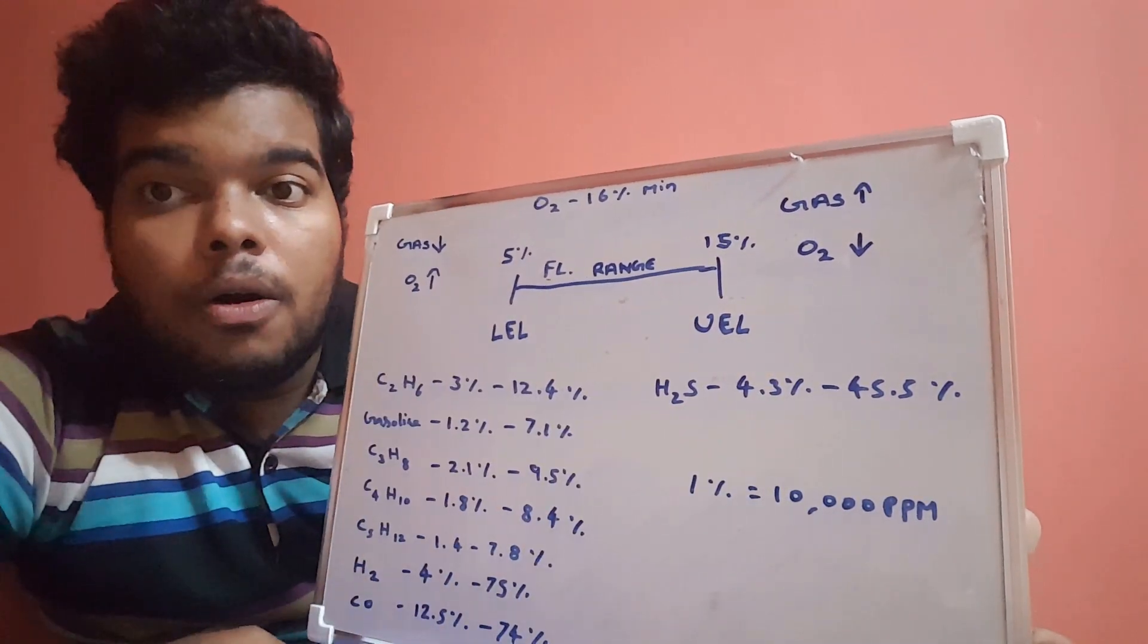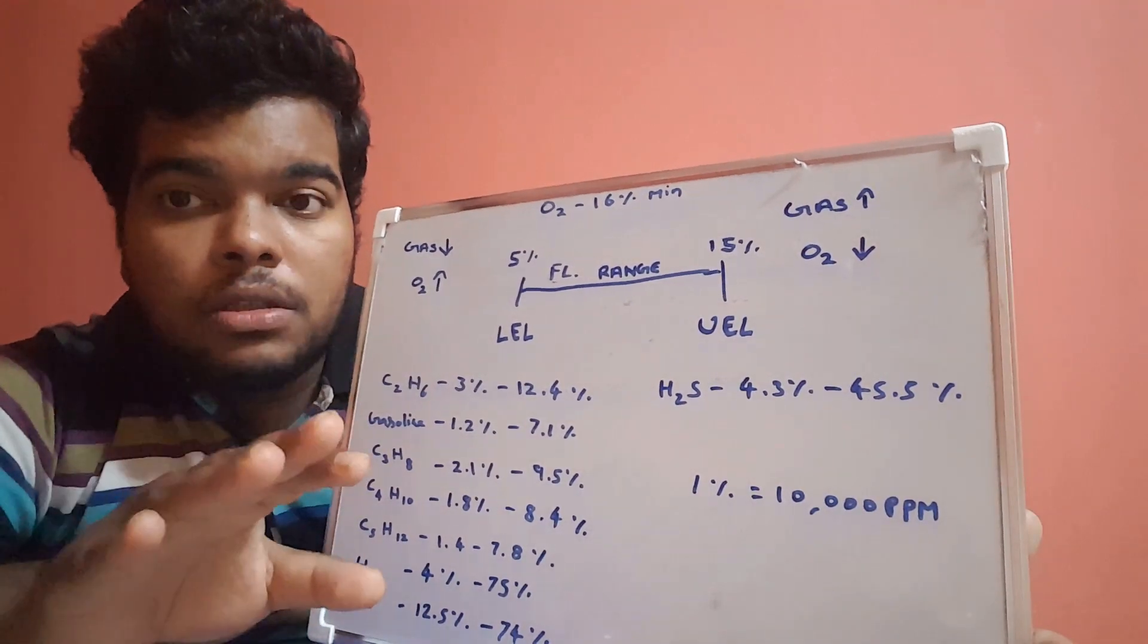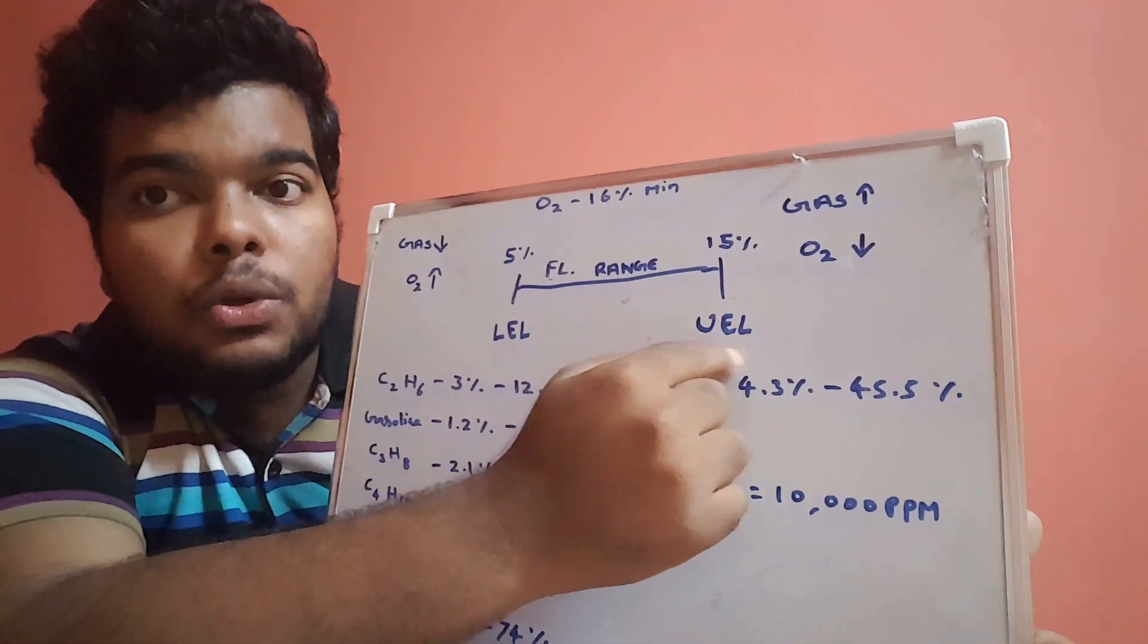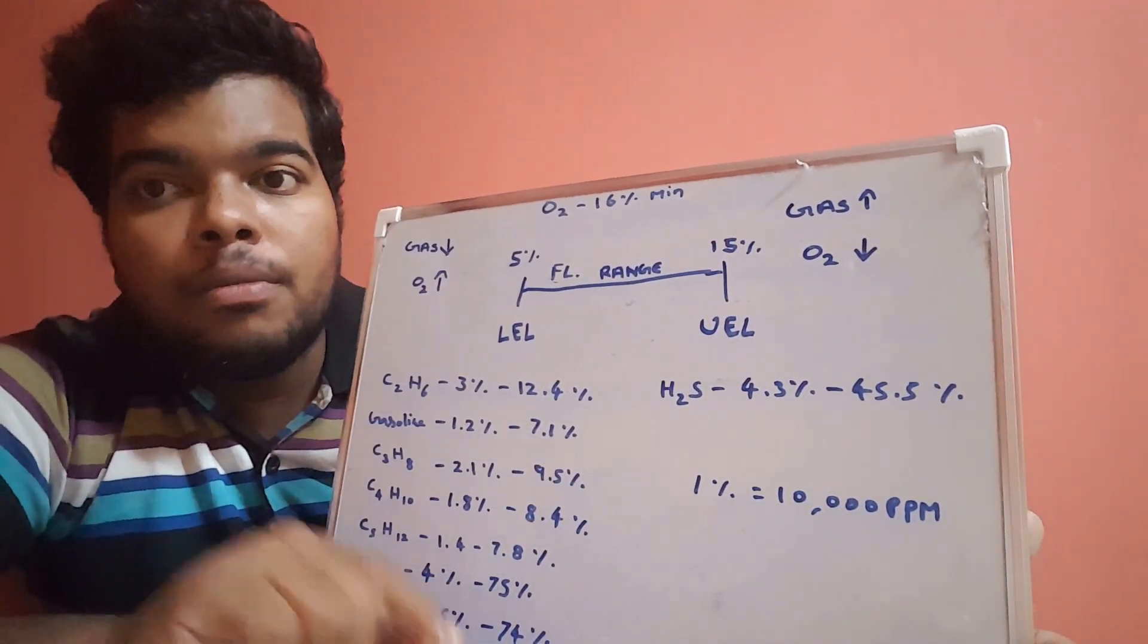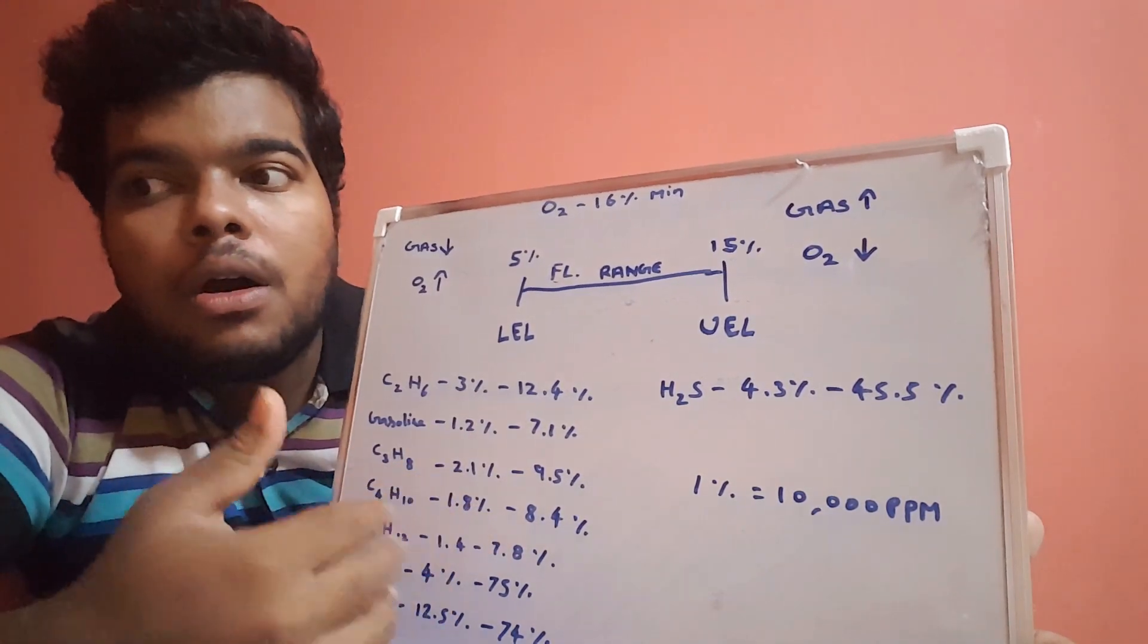The oxygen level will go down, so before turning on this UEL alarm, the oxygen low-level alarm will turn on definitely. Below 19.5 percentage, definitely the oxygen alarm will be on and we won't get this UEL value at that time.